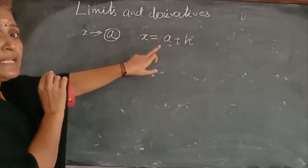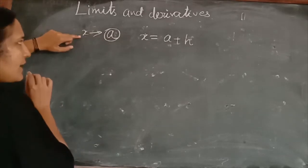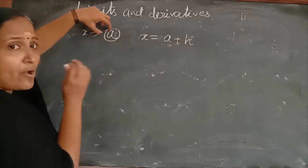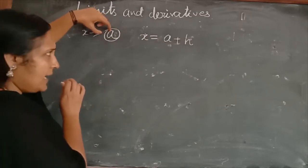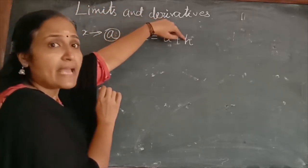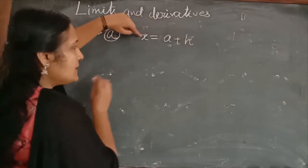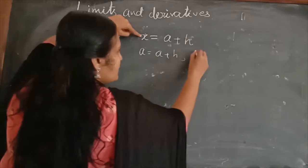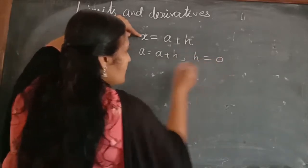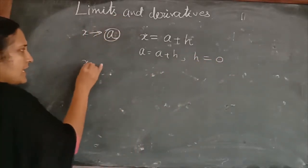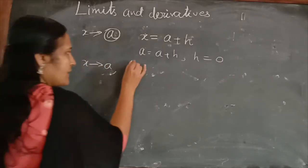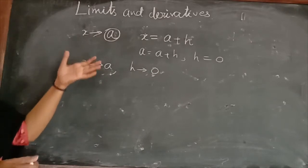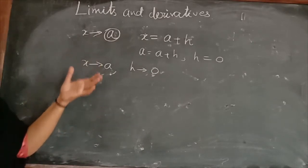Now how the limit will change: when x tends to a, meaning when the value of x is approximately equal to a, we substitute x = a, giving a = a + h, which means h = 0. So when x tends to a, our limit h tends to 0. After that we will continue with the following steps.